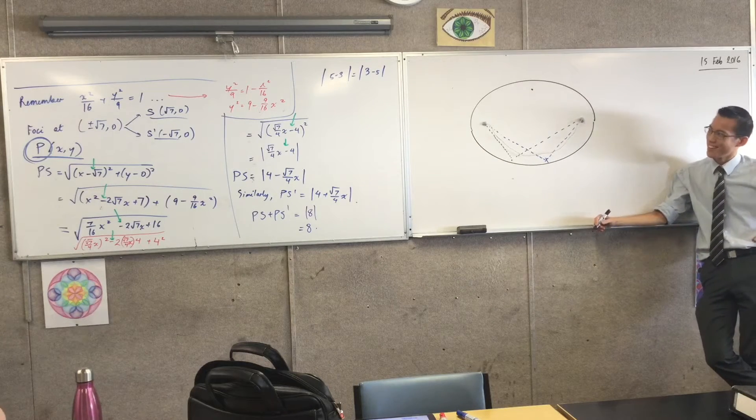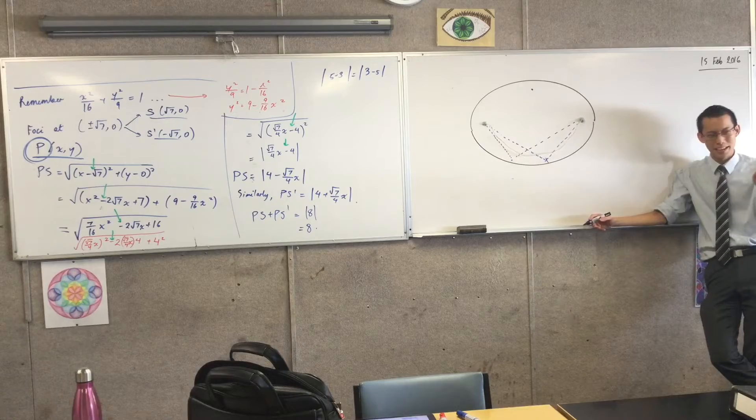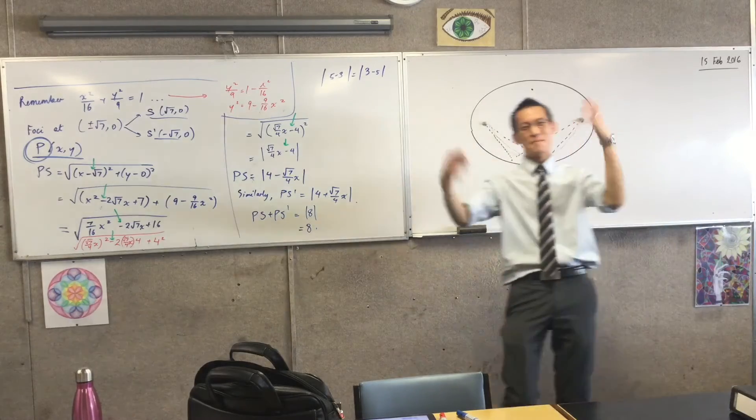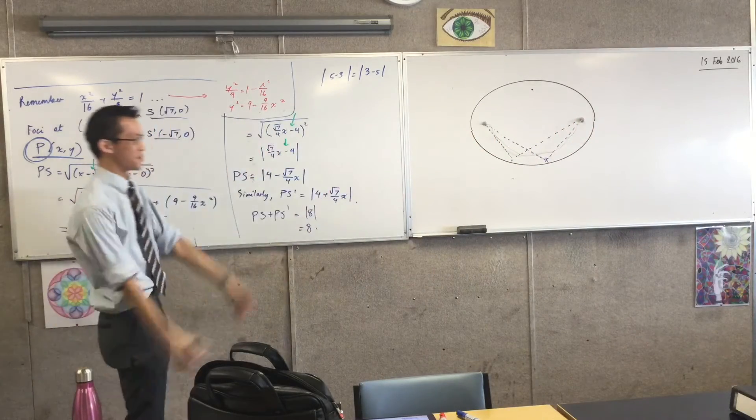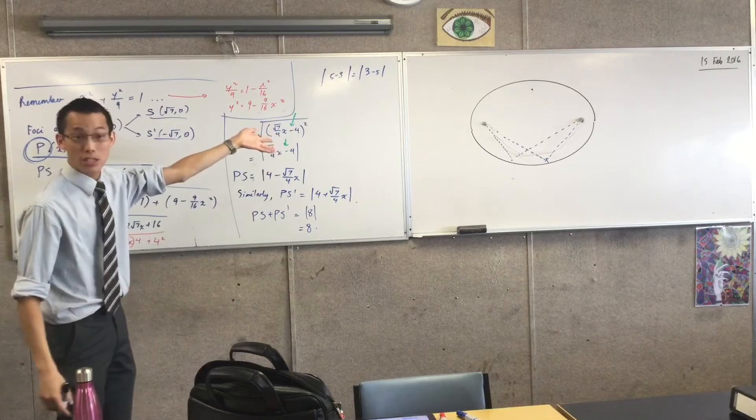So, conclusion. Bring string and blue tack to your net. I said I've been having so much trouble drawing ellipses. Why did I just, now, what have we just established?